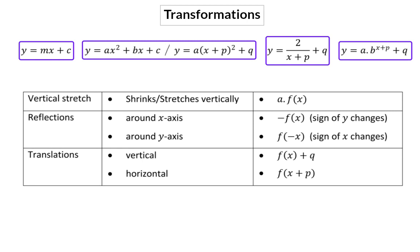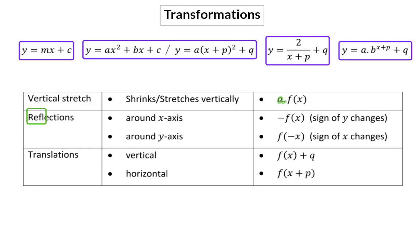The first transformation we had a look at is a vertical stretch, and this happens when the whole equation is multiplied by a constant value in front. The second possible transformation is a reflection. We had a look at two different types of reflections, and the first one is reflection around the x-axis, which means that the graph is folded on the x-axis, and everything that was at the top would now be reflected to the bottom and the other way around. So clearly you can see that y's sign changes, and then the whole equation sign has to change, or you have to multiply it with a minus.